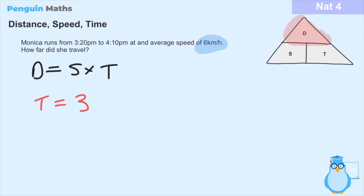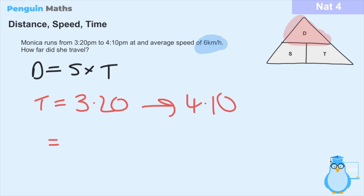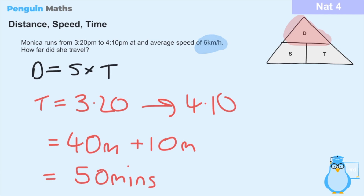To find the time, she runs from 3:20 to 4:10. From 3:20 to 4:00 is 40 minutes, and from 4:00 to 4:10 is an additional 10 minutes. So in total, from 3:20 to 4:10, she ran for 50 minutes.